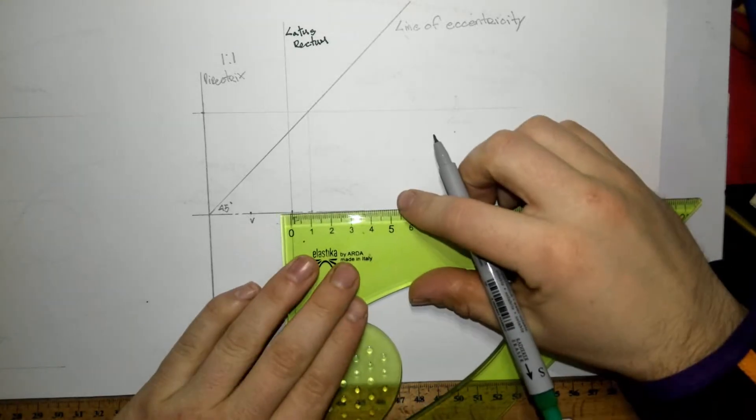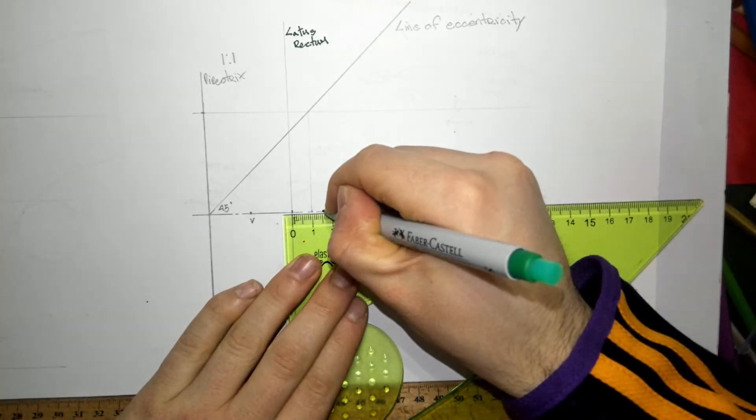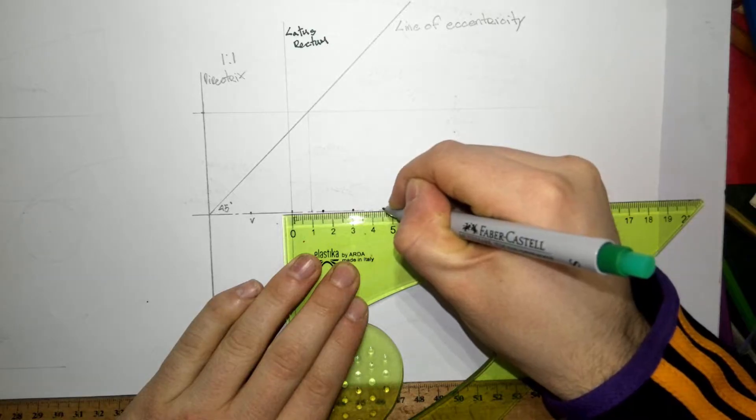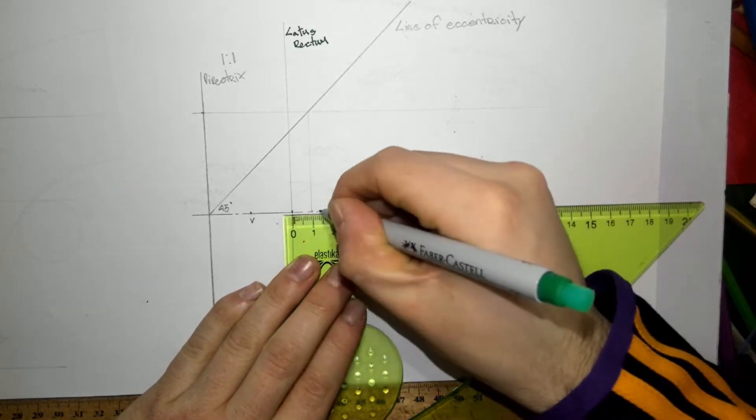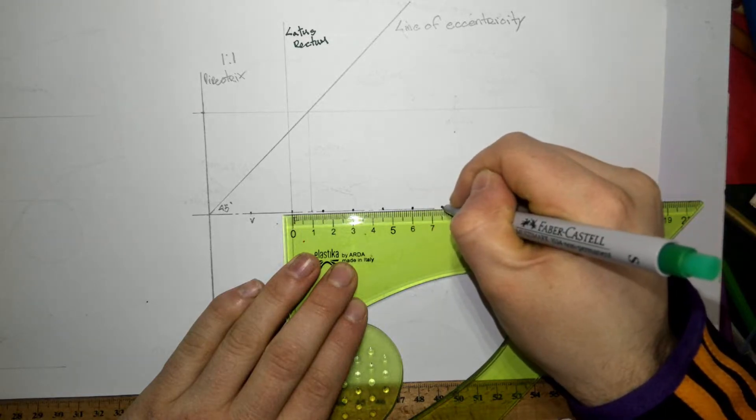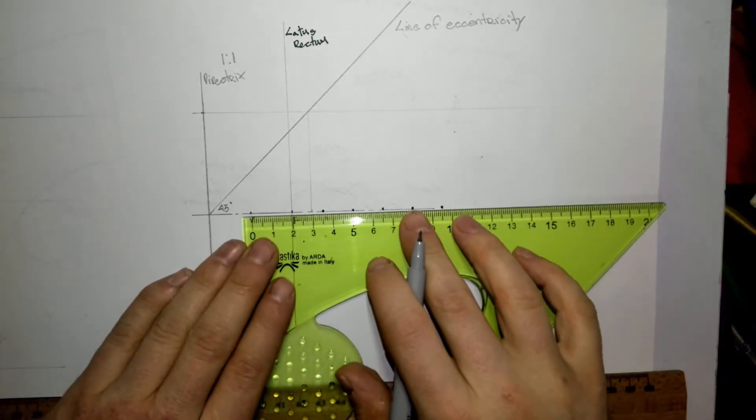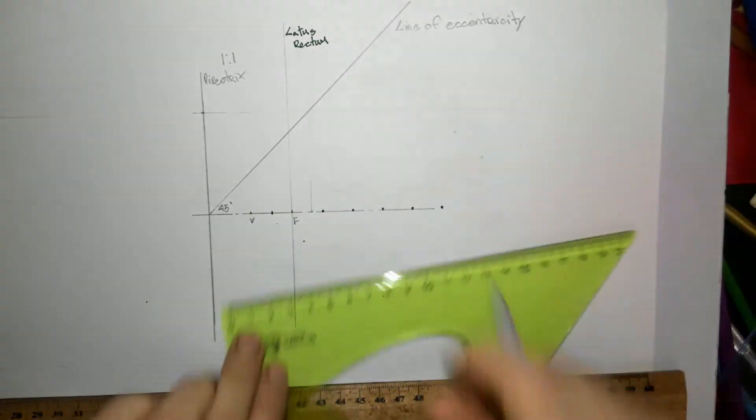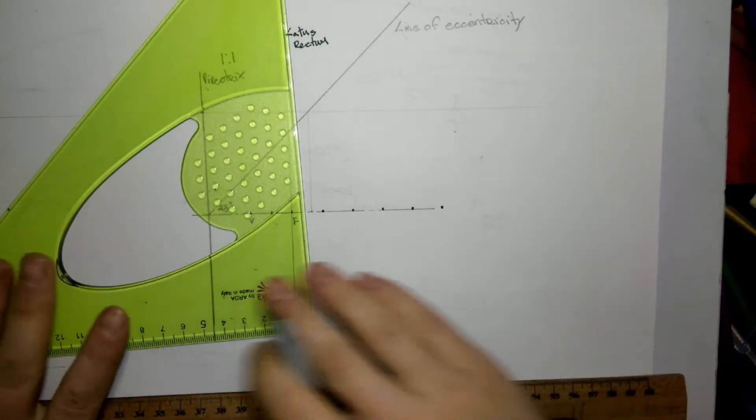Now from F I'm going to mark points every, we'll say, fifteen millimeters from F. It doesn't matter the distance between these points—they can be any distance apart, but I'm just going to do fifteen for the sake of it. And then between B and F I'm going to mark them halfway in between.